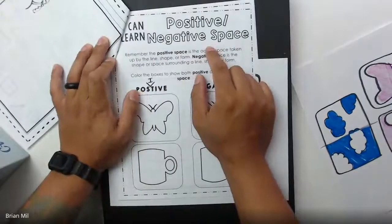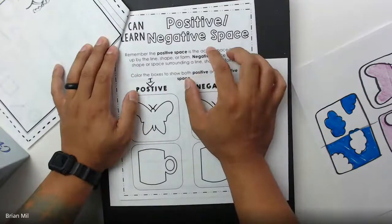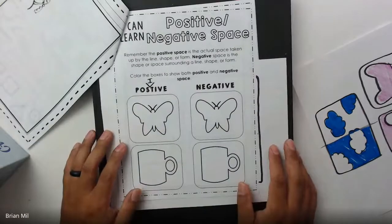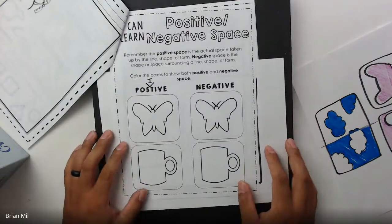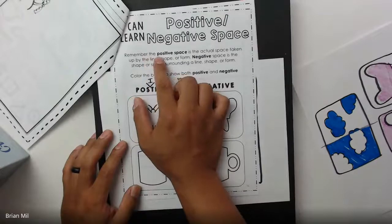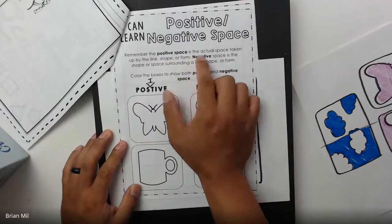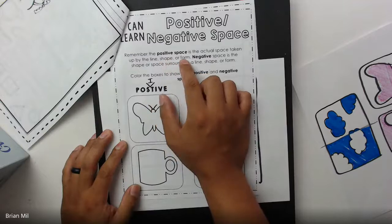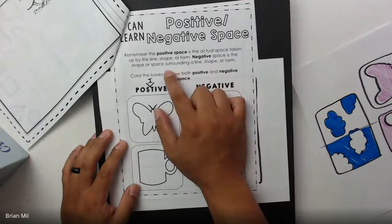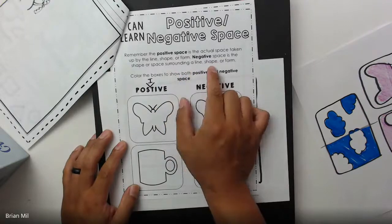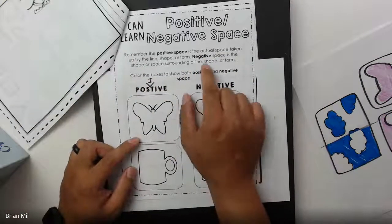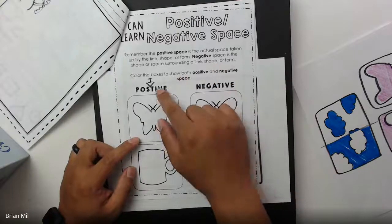If we turn the page, we're going to talk about positive and negative space, because space is one of the seven elements of art. It says: positive space is the actual space taken up by the line, shape, or form. Negative space is the shape or space surrounding a line, shape, or form.